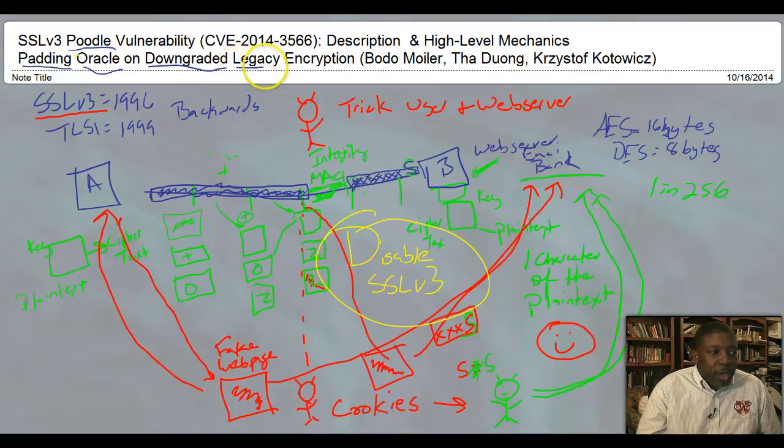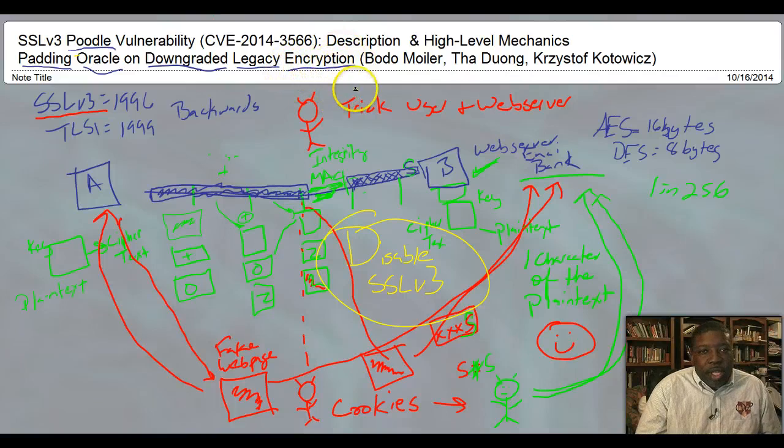Legacy basically means older systems. The older systems are probably still running SSL version 3. And Encryption - that's basically what this is all about: encryption, decryption, and getting your information through this encryption process.